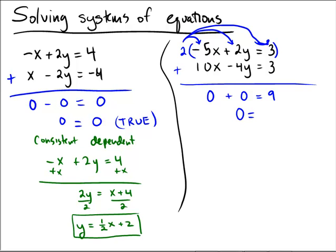So here we get the equation 0 equals 9. 0 equals 9, is that true or false? That's false and so here we have no solutions because it's never going to yield a true statement. So this is a system of equations that we would call inconsistent and we would say that there is no solution to this particular system of equations.